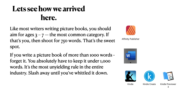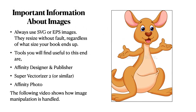On the right-hand side you can see some of the applications I'm using: Affinity Publisher, Word, Kindle, Kindle Create, and Kindle Previewer, which I'll look at momentarily. Now, important information about images. Always use SVG or EPS images if you can. If you're absolutely sure your document will never be resized, you might get away with other sorts of images. When you upload your file, you may find that your images need to be converted to JPGs — that's a matter for KDP. Tools you'll find useful for these conversions are Affinity Designer and Publisher, Super Vectorizer, and Affinity Photo.